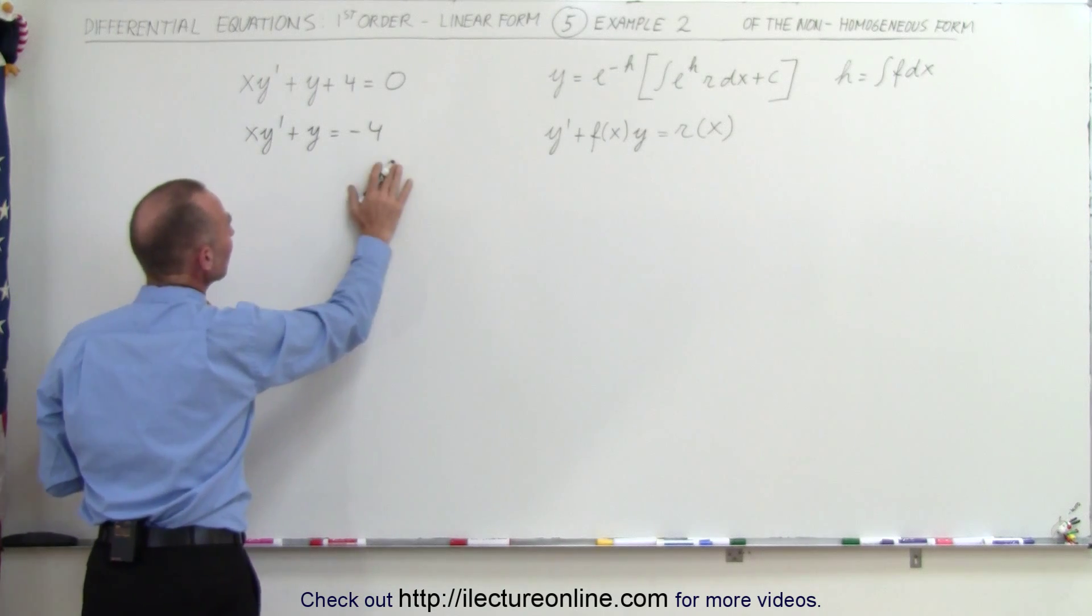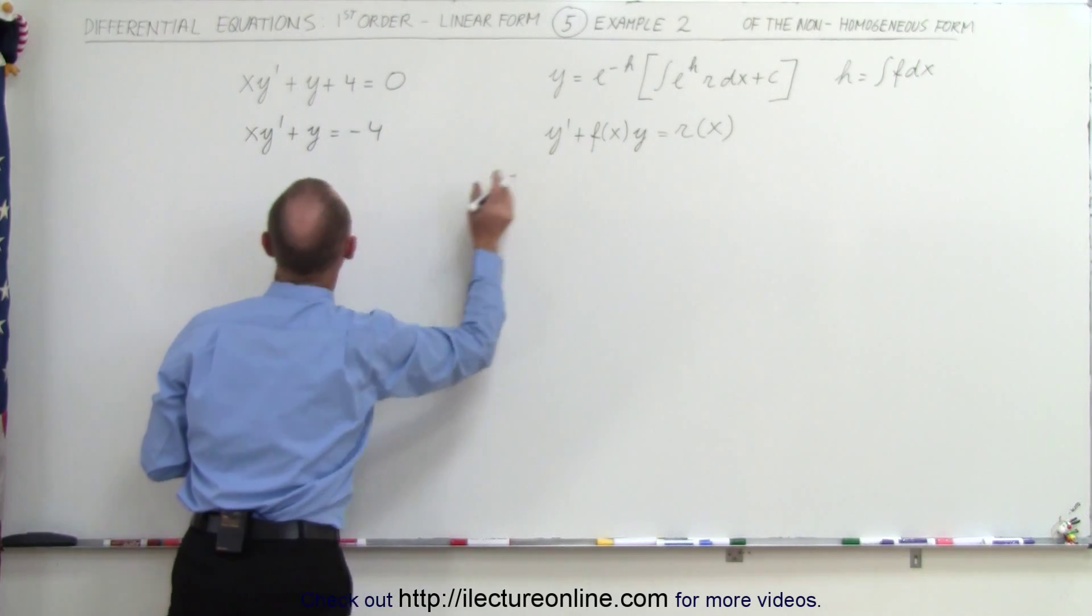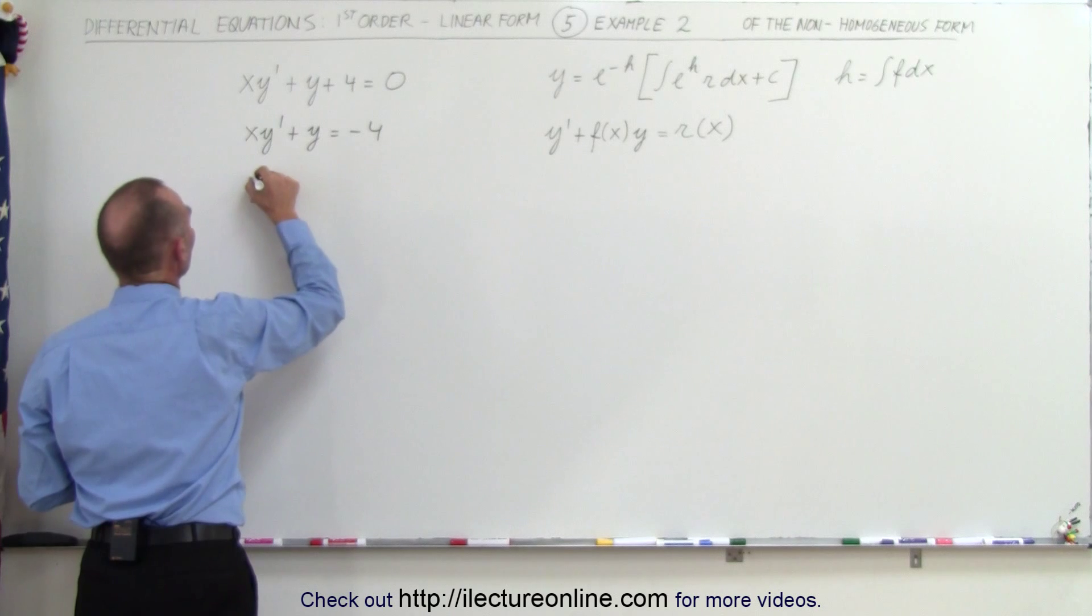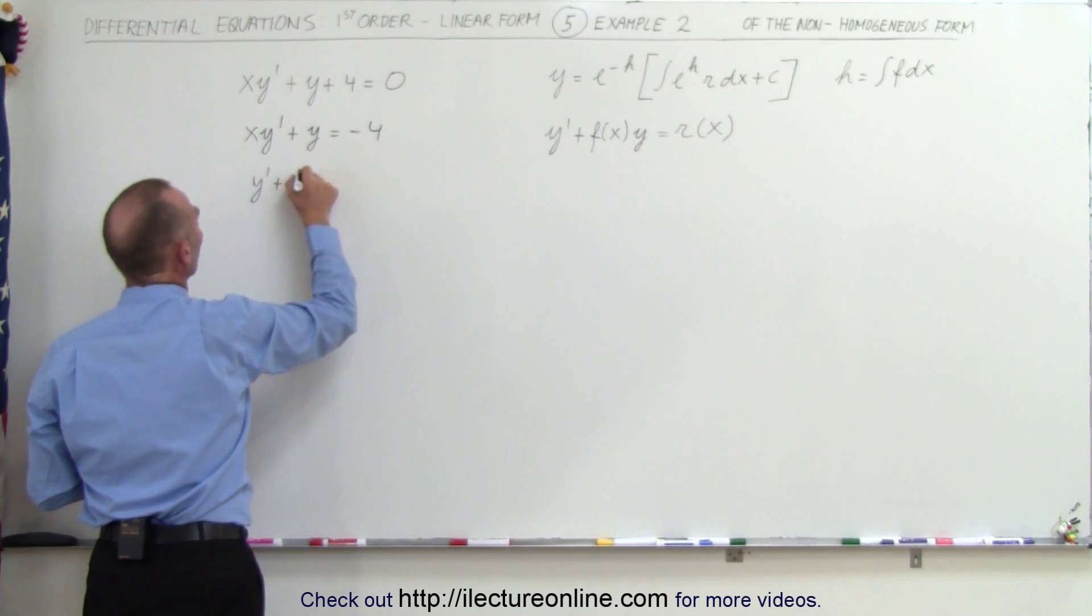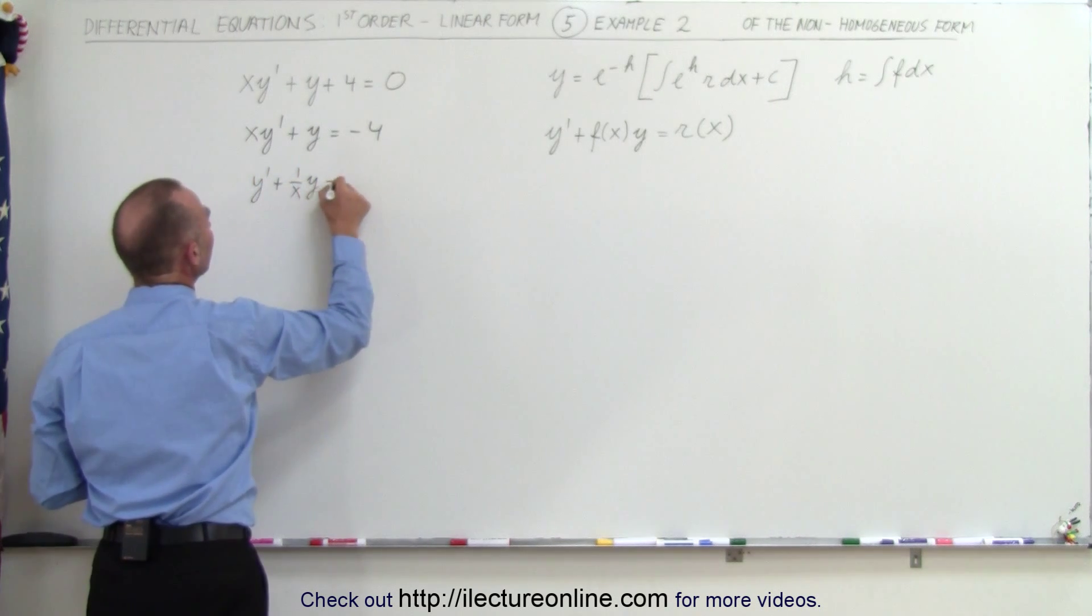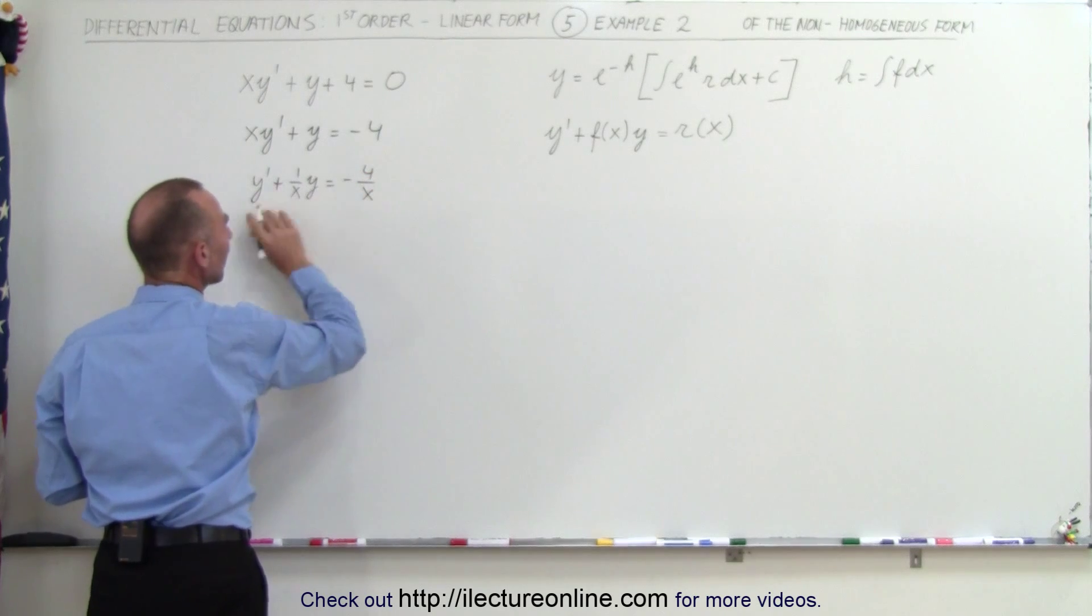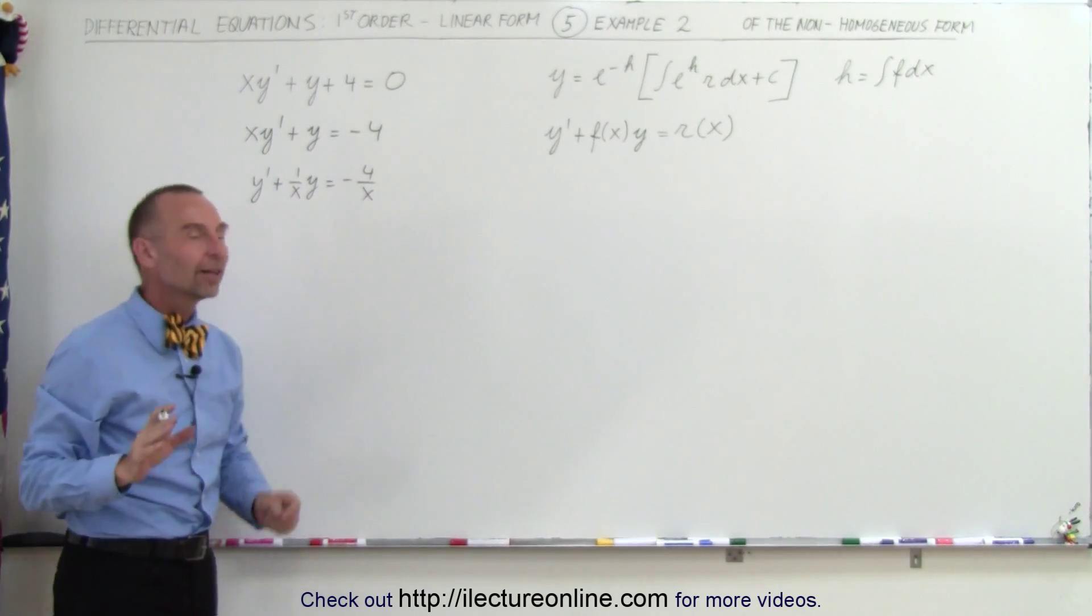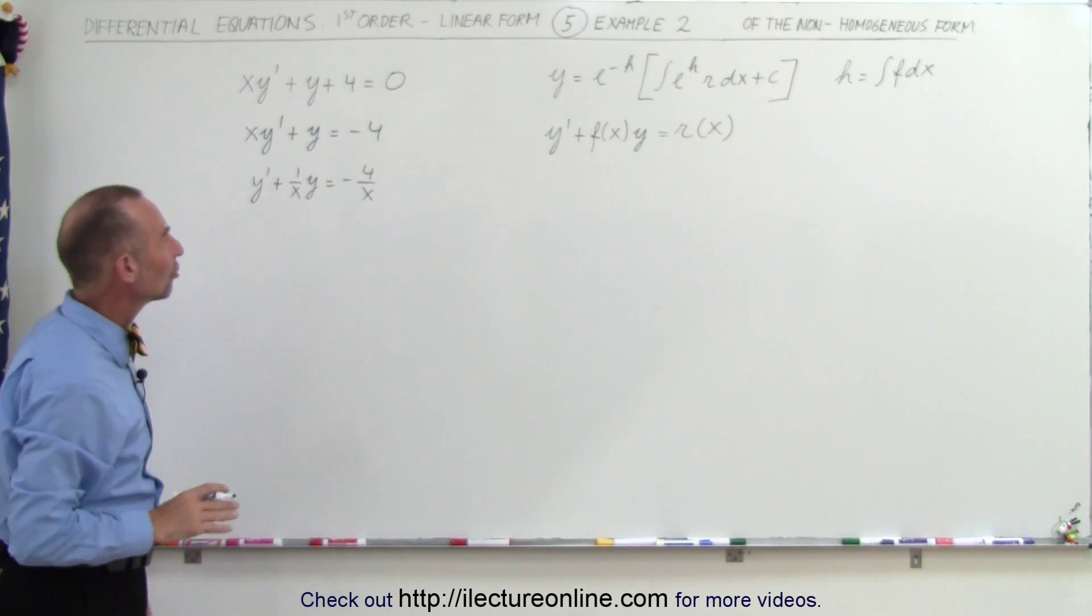And then if we divide both sides of the equation by x because we want y' by itself, we end up at y' plus 1 over x times y equals minus 4 divided by x. And now you can see this is no longer a homogeneous equation.